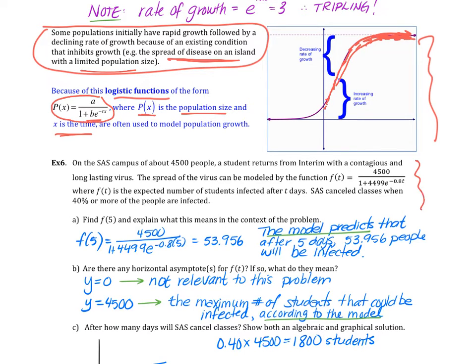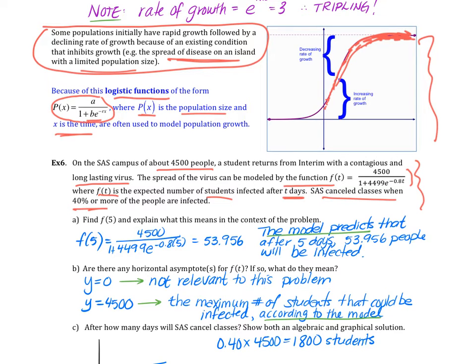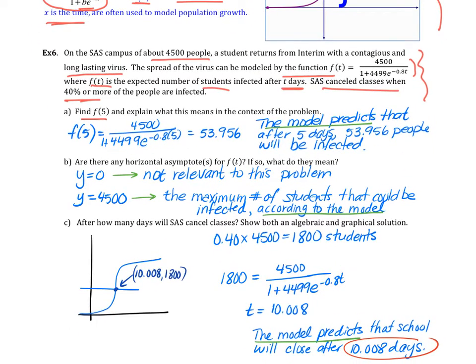Here's an example below. On the SAS campus of about 4,500 people, a student returns from interim with a contagious, long-lasting virus. The spread of the virus can be modeled by the function f(t) = 4500/(1 + 4499e^(-0.8t)), where f(t) is your number of students infected and t is the number of days that have passed. We know that SAS is going to cancel classes when 40% or more of the people are infected. Part a says find f(5) and explain what this means in the context of the problem. Remember the t value is our x value, which is the number of days. So after five days, we're going to find the population that is infected.